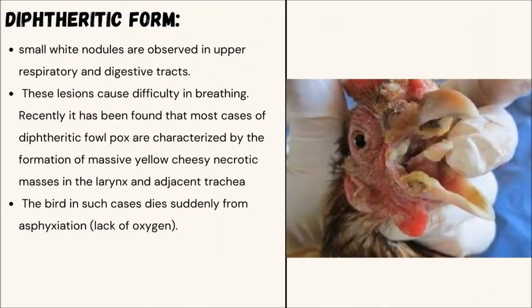Diphtherotic form: Small white nodules are observed in the upper respiratory and digestive tract. These lesions cause difficulty in breathing. Most cases of diphtherotic Fowl Pox are characterized by the formation of massive yellow, cheesy necrotic masses in the larynx and adjacent trachea. The bird in such cases dies suddenly from asphyxiation or lack of oxygen.